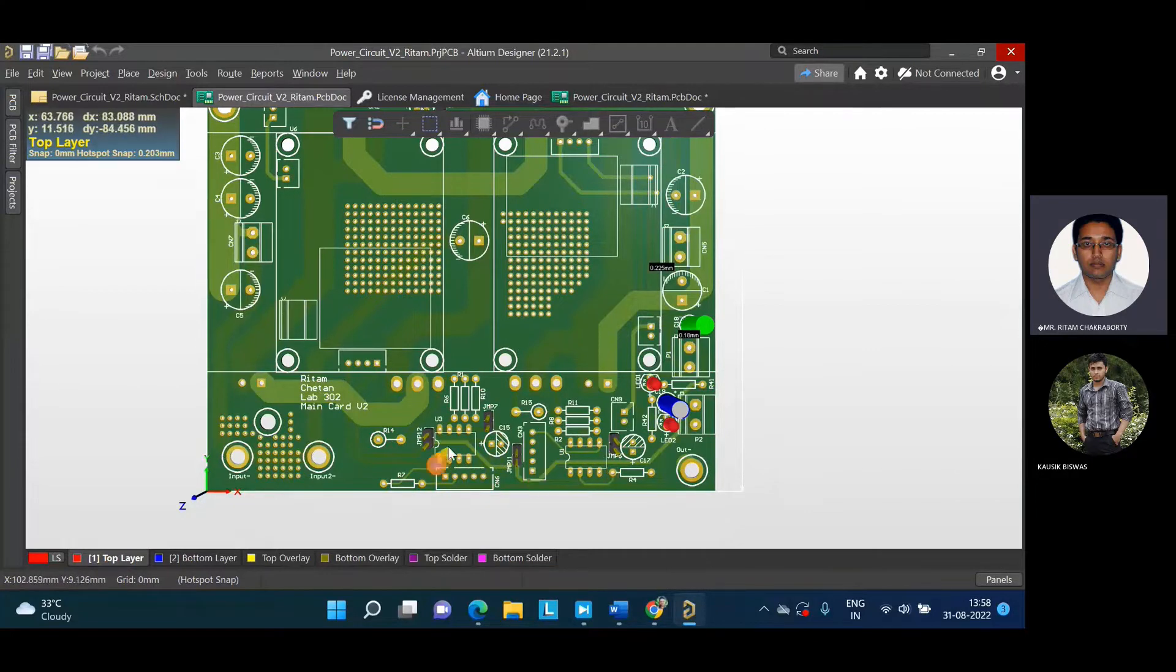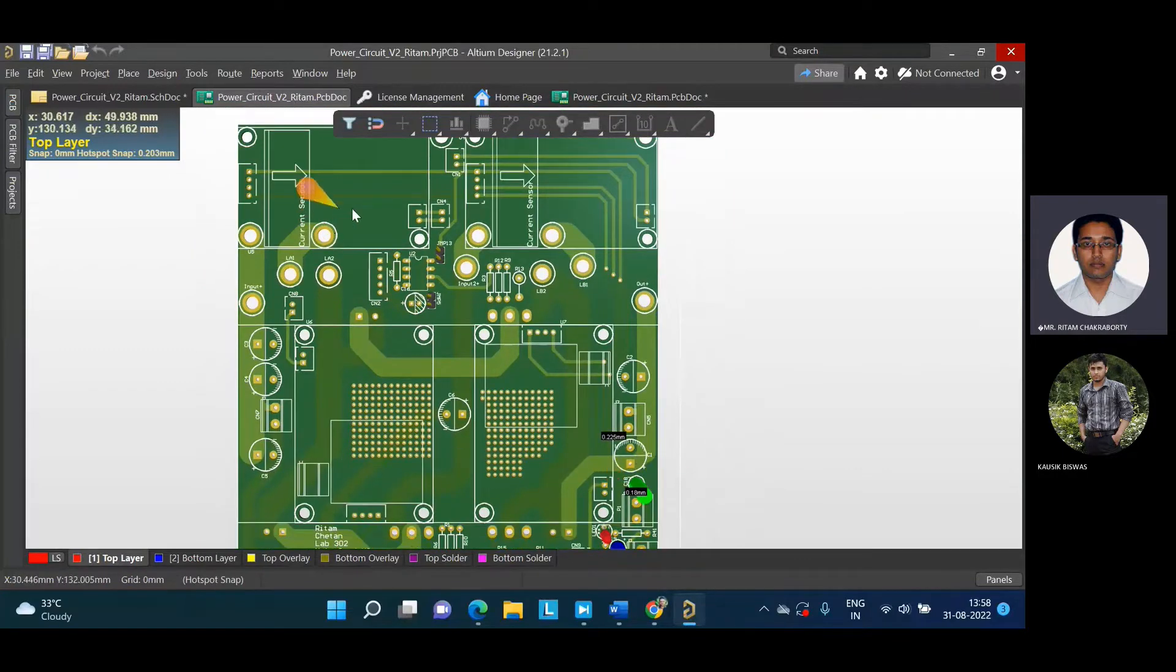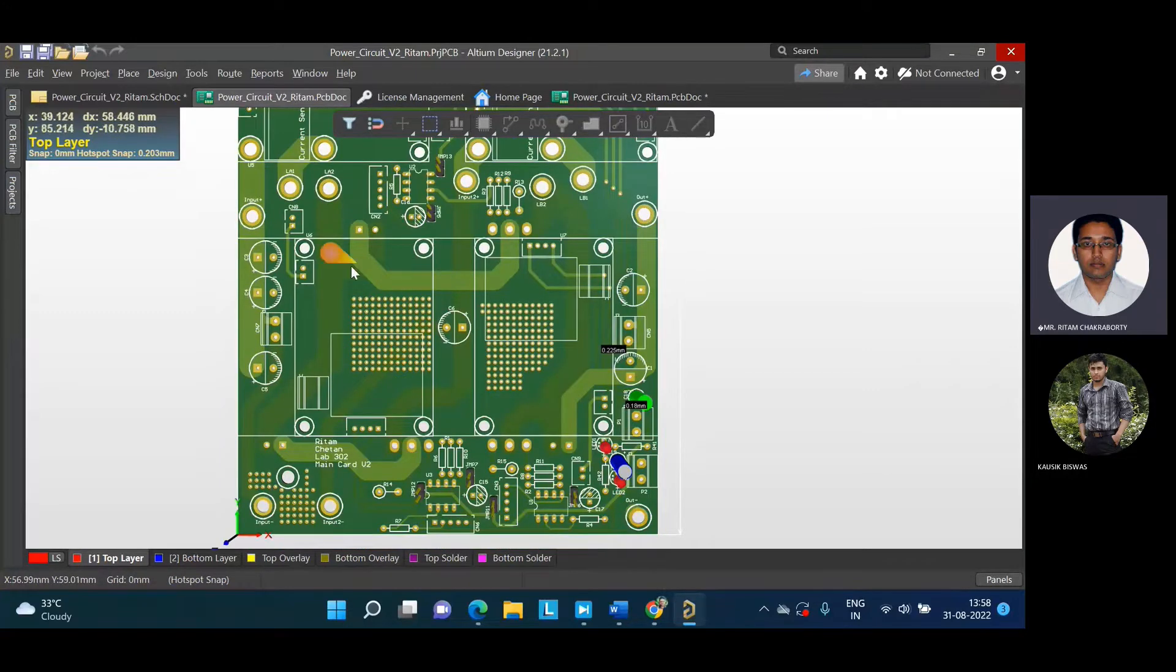This is for one switch, this is for the other, and this is for the third switch. For the sensor, we have provisions for voltage sensor and current sensor. We are not presently using the current sensor. We are using the estimation technique as mentioned in the paper.